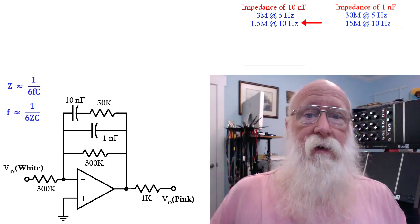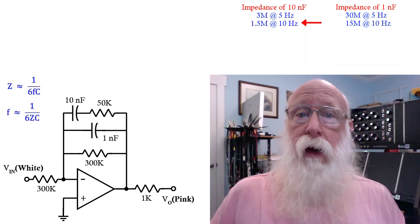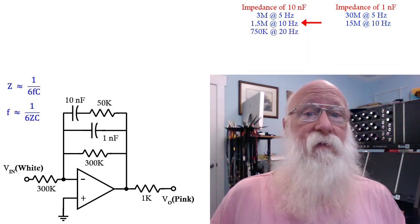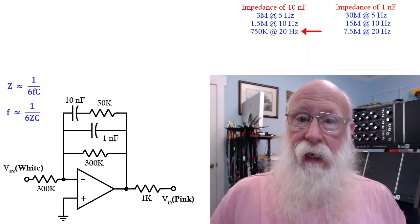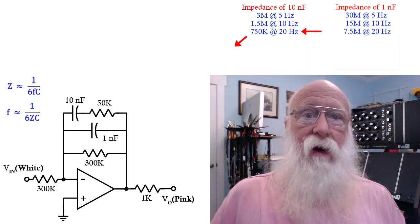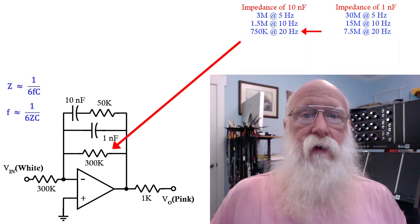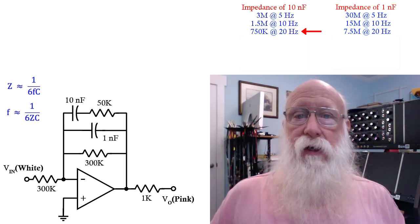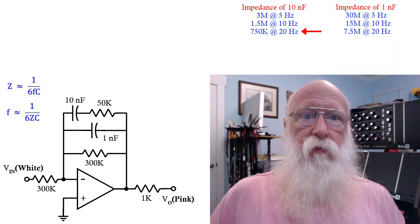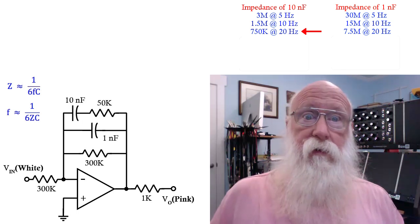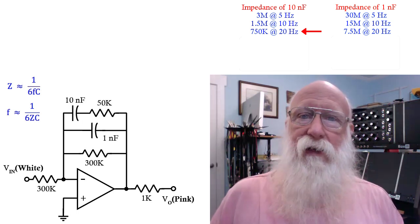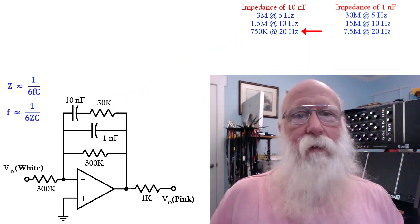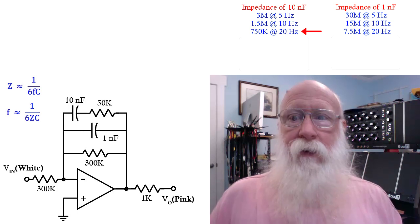If you double that again to 20 hertz, which is very close to the bottom end of human hearing, then the impedance of that 10 nanofarad is 750K. And now that's getting fairly close to our 300K, and as frequency continues to increase, the impedance of the 10 nanofarad continues to drop, and our response starts dropping. Note, at this point, the impedance of the 10 nanofarad is still considerably greater than the 50K resistor it's in series with, so I'm just sort of ignoring that.